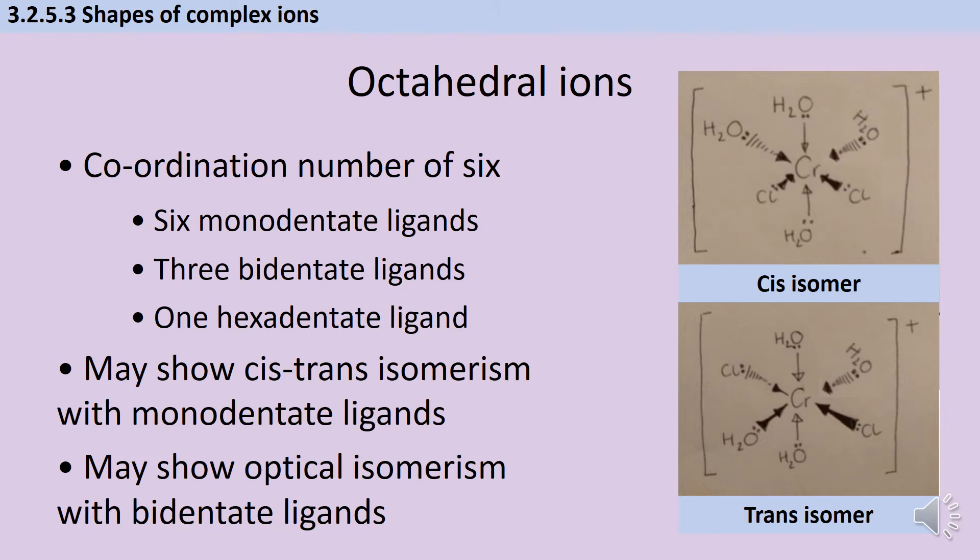And when this happens, it's possible to have what we call cis-trans isomerism. So isomerism is to do with where we have the same atoms but just rearranged in different geometric space. And cis-trans isomerism is basically a special form of EZ isomerism, and it's where you're talking about the ligands that are the same as each other being either on the same side, which is what we call cis, or on opposite sides, which is what we call trans.